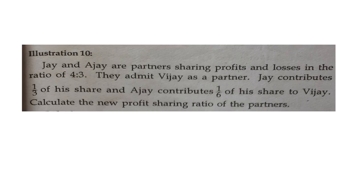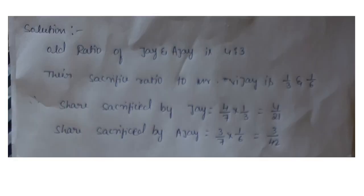Vijay is to be given a share where J contributes 1/3rd and Ajay contributes 1/6th of his share. The old ratio of J and Ajay is 4:3. They sacrifice in favor of Vijay — J sacrifices 1/3rd and Ajay sacrifices 1/6th of his share.